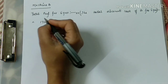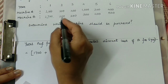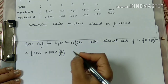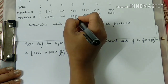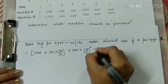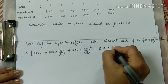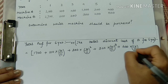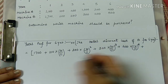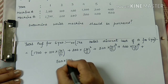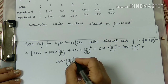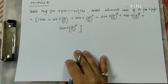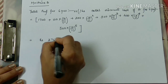For machine B: year 1 cost is 1700; year 2 is 100 × (10/11)¹; year 3 is 200 × (10/11)²; year 4 is 300 × (10/11)³; year 5 is 400 × (10/11)⁴; year 6 is 500 × (10/11)⁵. Note that for the 6th year, n = 5, one less than the year number. When you solve this, you get rupees 2765.